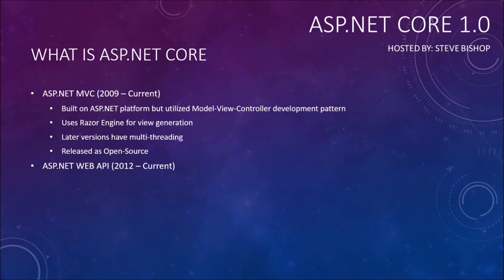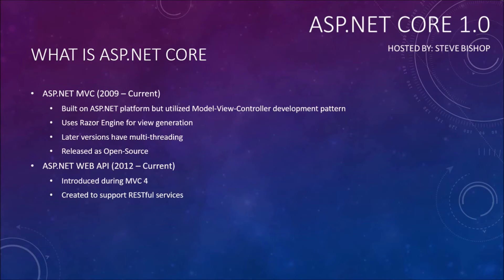Along with ASP.NET MVC came the concept of ASP.NET Web API, which operated very similarly to MVC. The first Web API was introduced during the MVC 4 cycle and was created to support RESTful services. Up to that point, WCF services were really the only framework offered by .NET to host data across the web. WCF was more SOAP-based and didn't offer a good platform for RESTful services, so Web API was designed and built around that RESTful service concept.